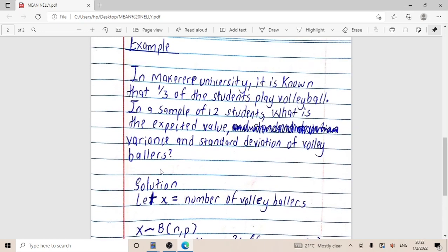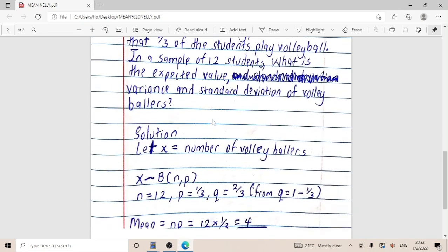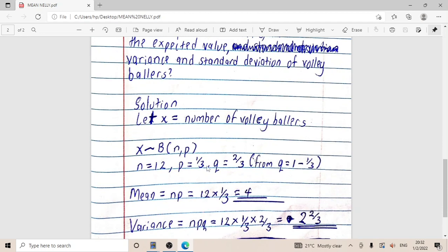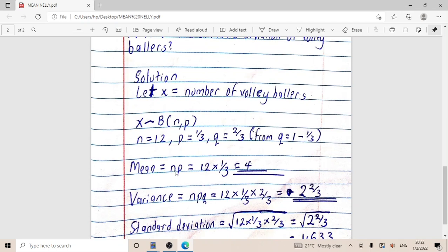We are having probability of success as one out of three, and then probability of failure will come from one minus one out of three, which will give us two out of three. So I apply the formula: for the mean it is equal to np, which is 12 times one-third, which equals four.